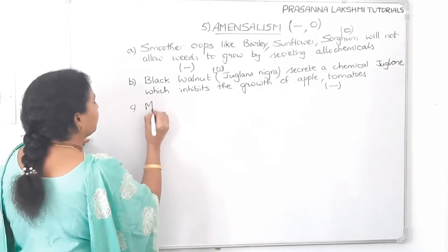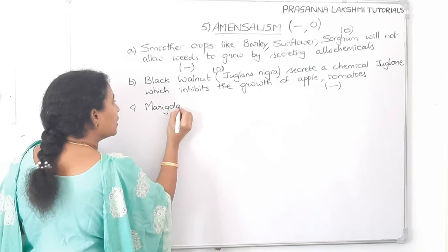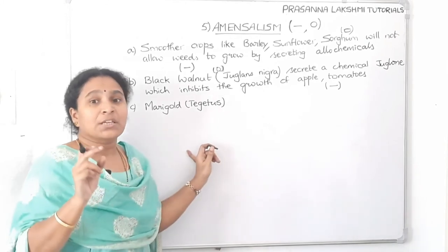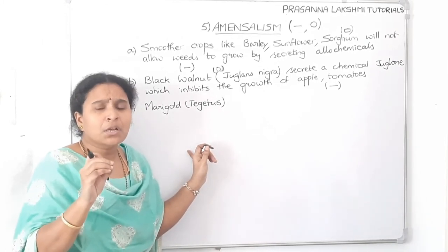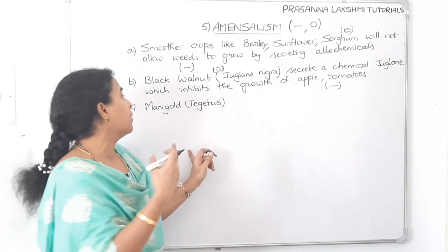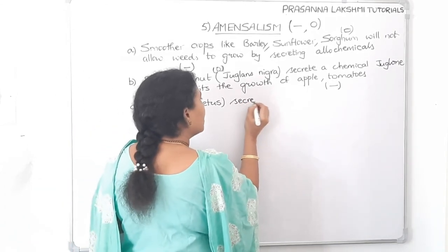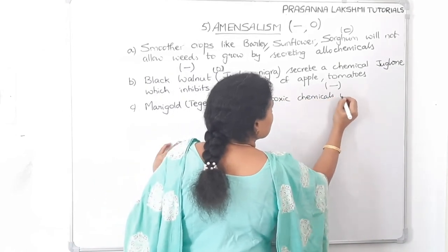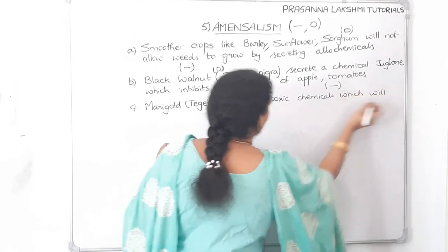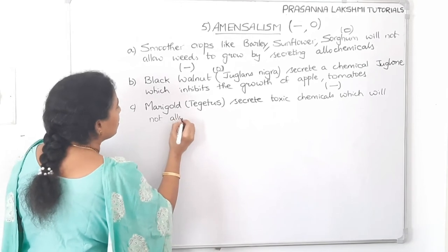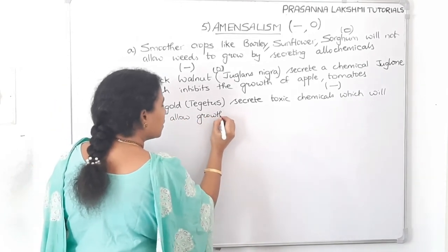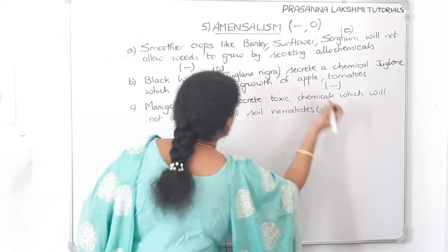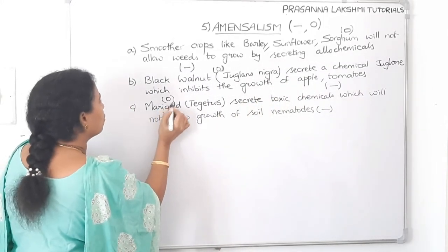The third example is marigold, called Tagetes. Marigold secretes toxic chemicals which will not allow soil nematodes to grow in the surrounding area. For the nematode it is minus, but for marigold it is zero.